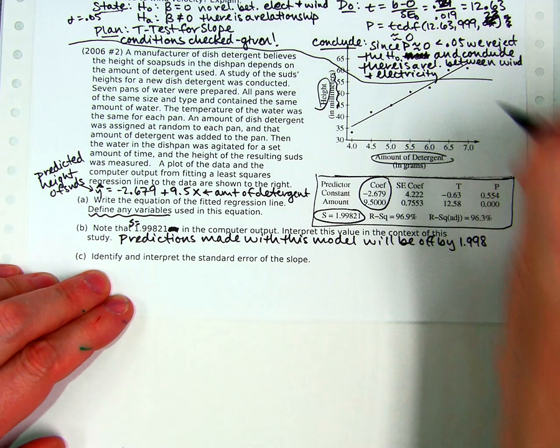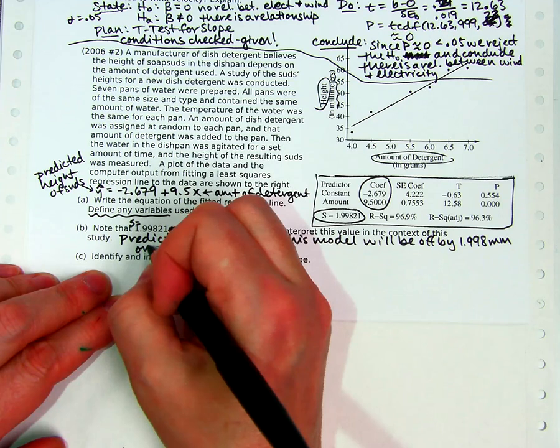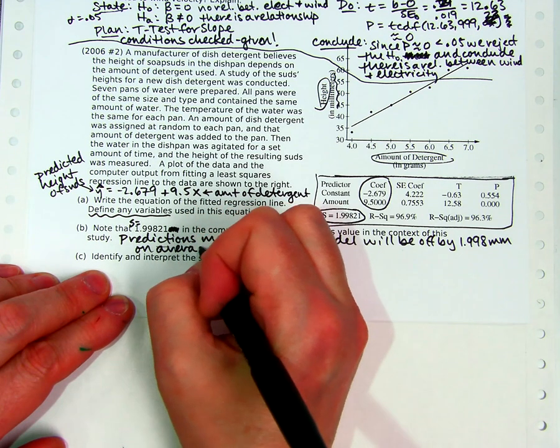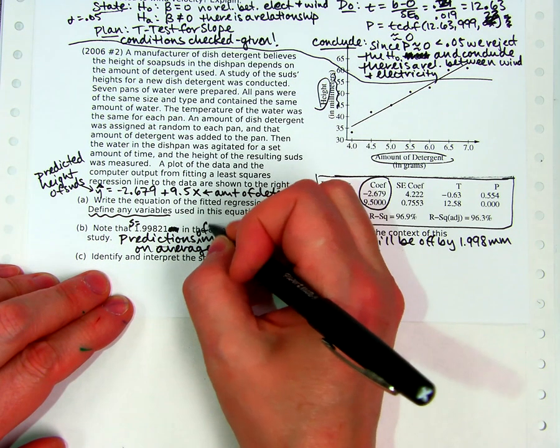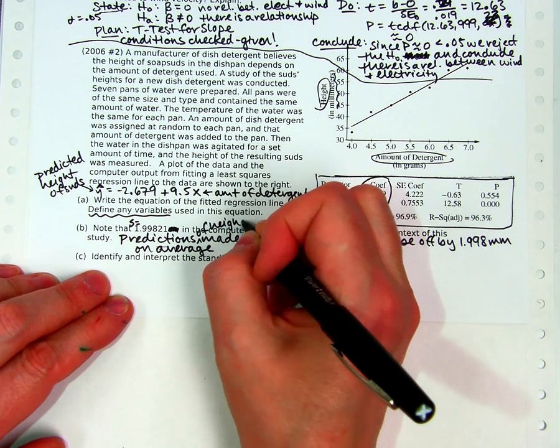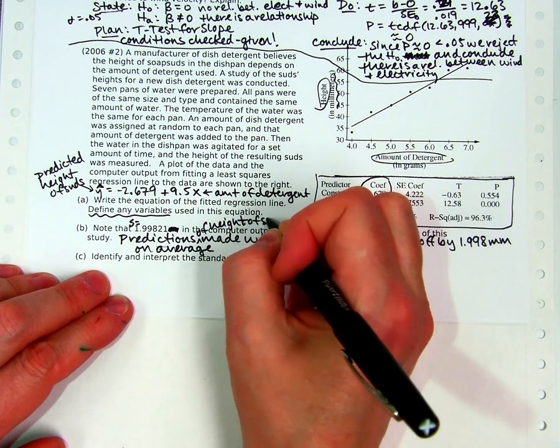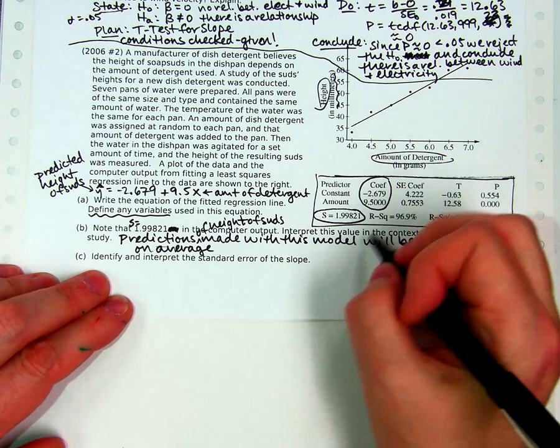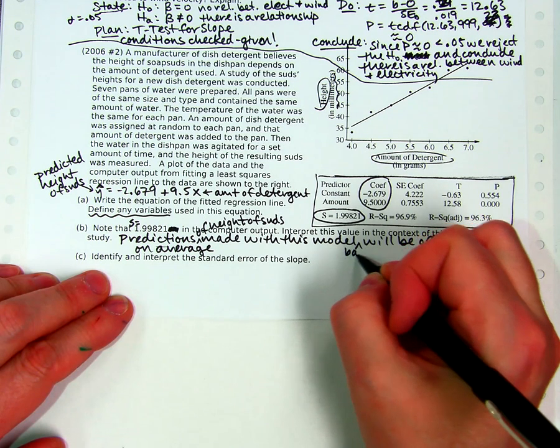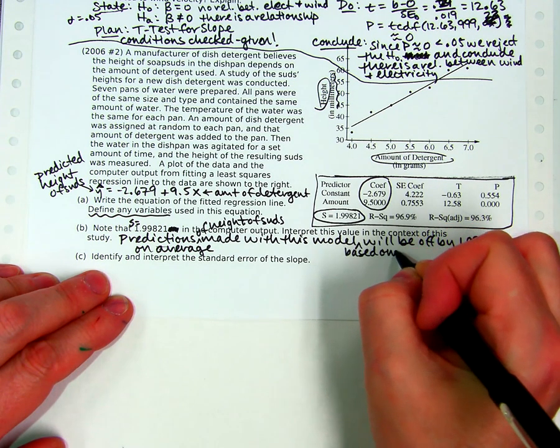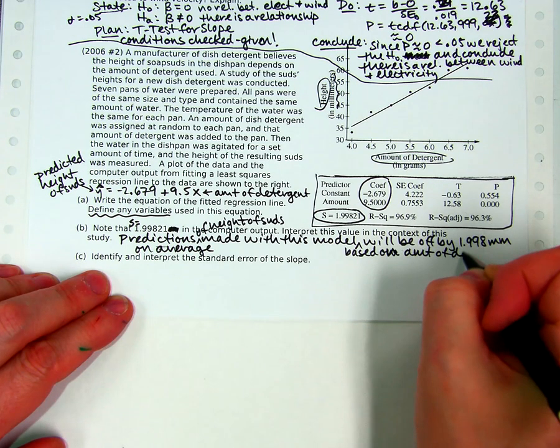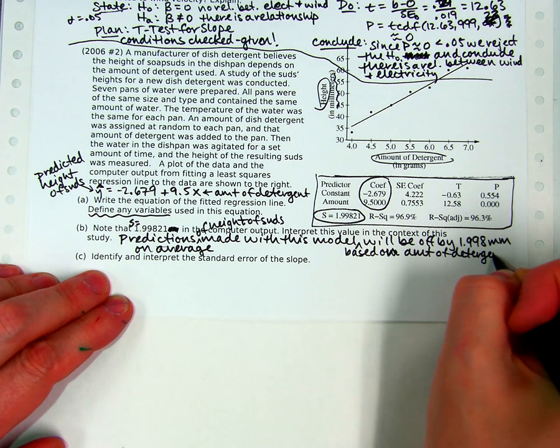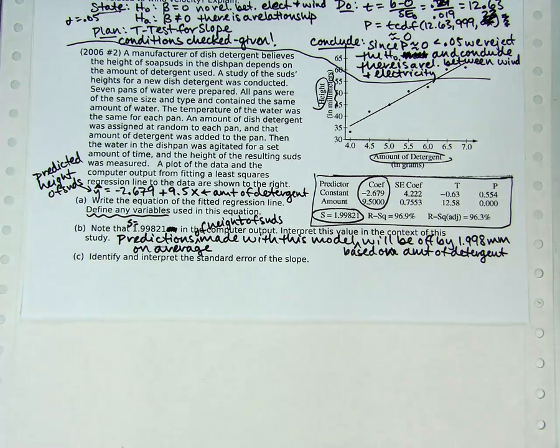That's not bad at all. We should add a little bit more about predictions of the height of the soap suds using this model based on the amount of detergent. That adds a little bit more content. Do you know what that number is in context?